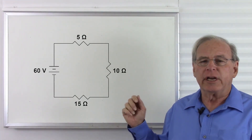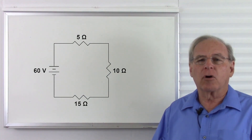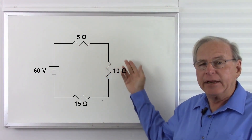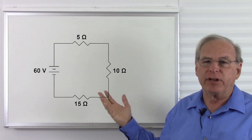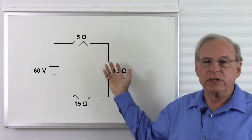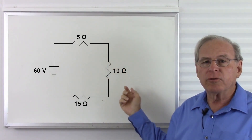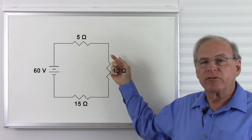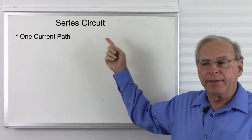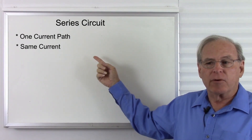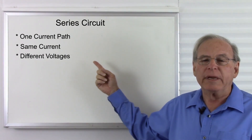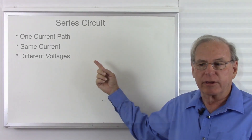The voltage in a series circuit is distributed according to Kirchhoff's voltage law, and the voltage will be different in different places in the circuit. The exception is if we have equal resistors, then we'll have equal voltages. But the voltage will be proportional to the resistance — so if the resistance is different, the voltage will be different.